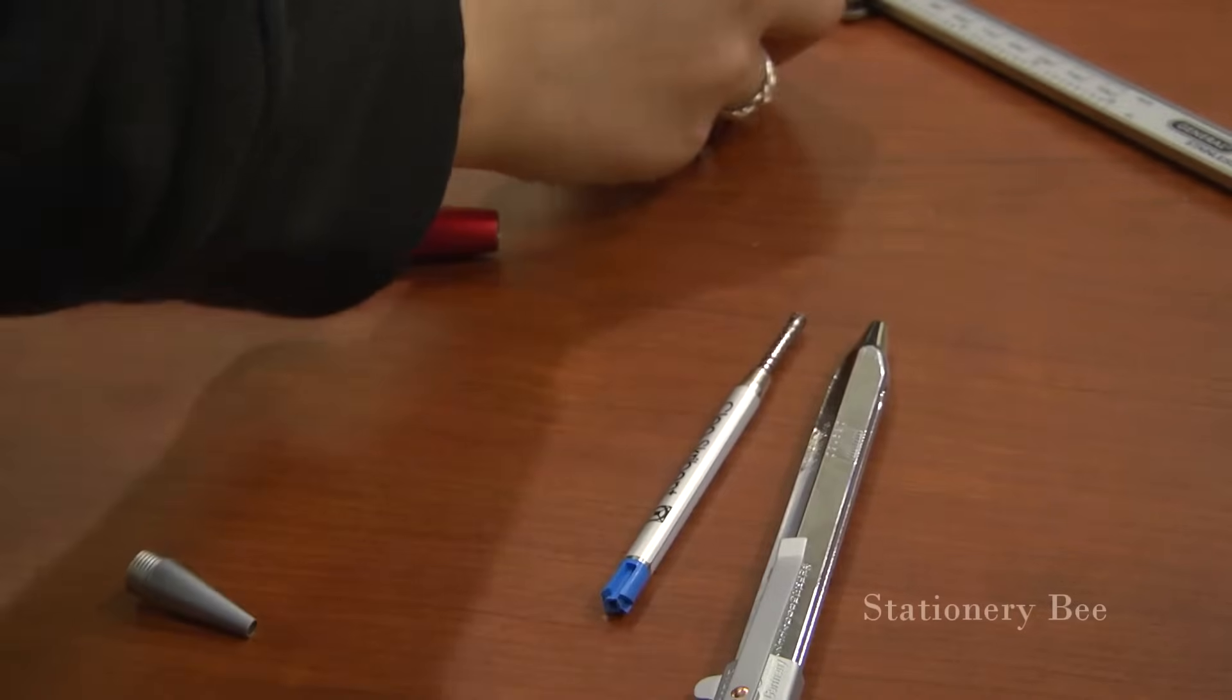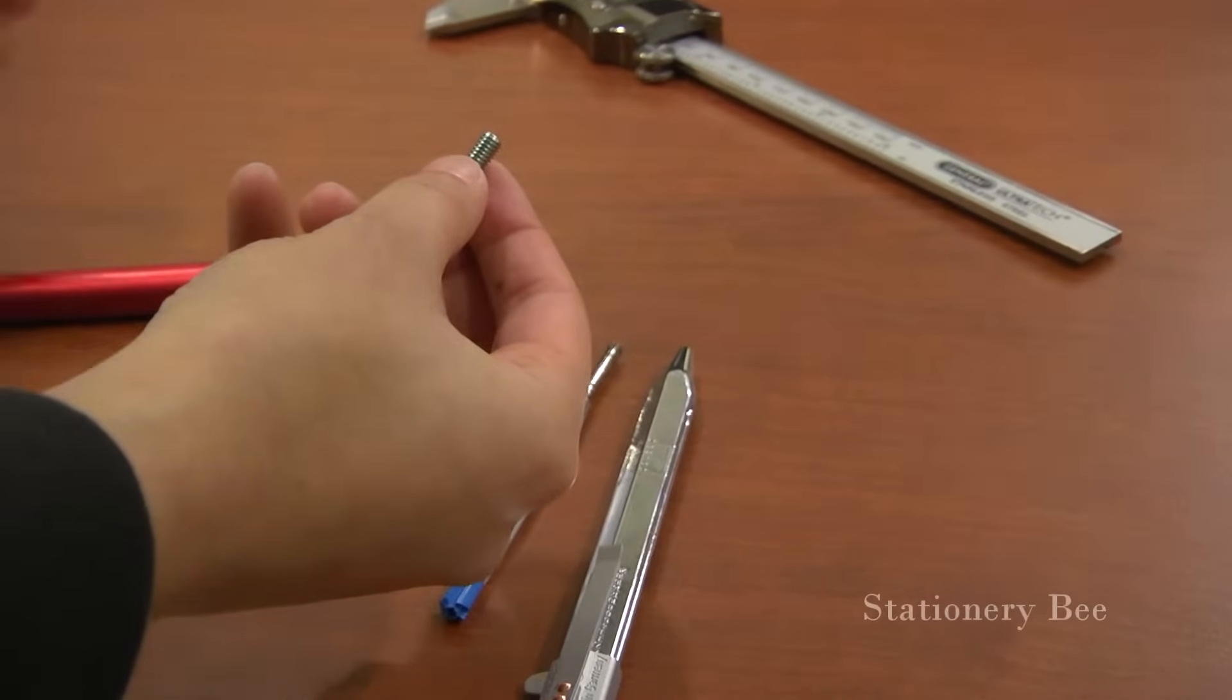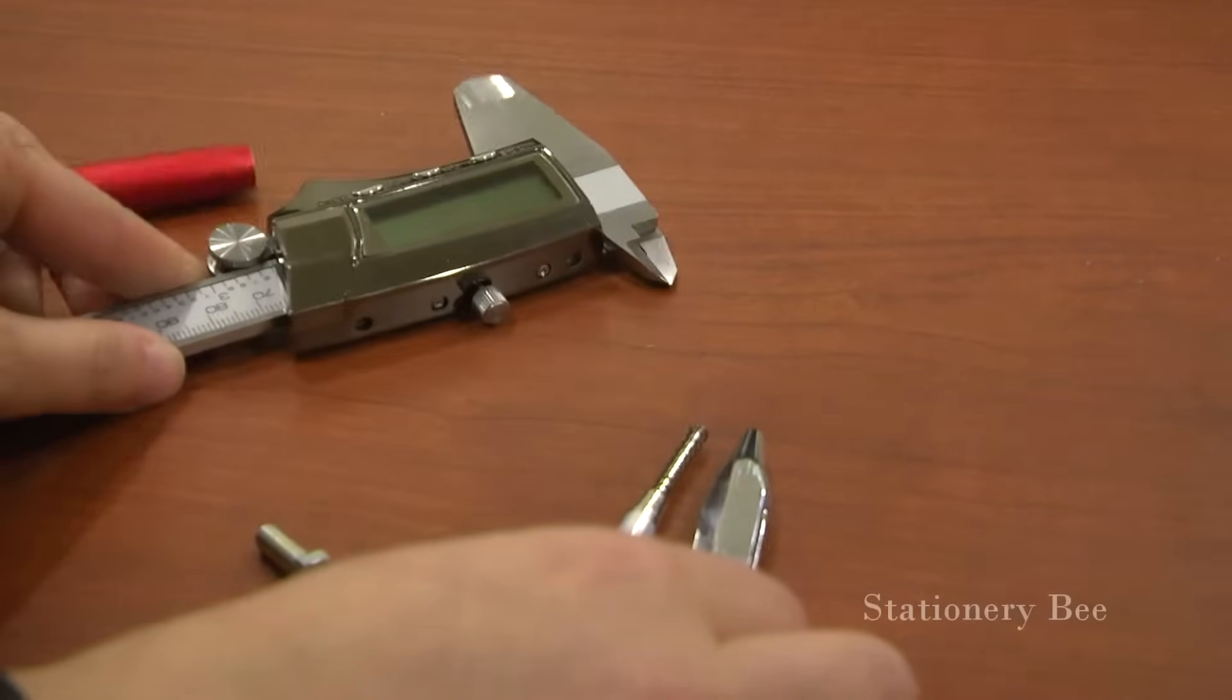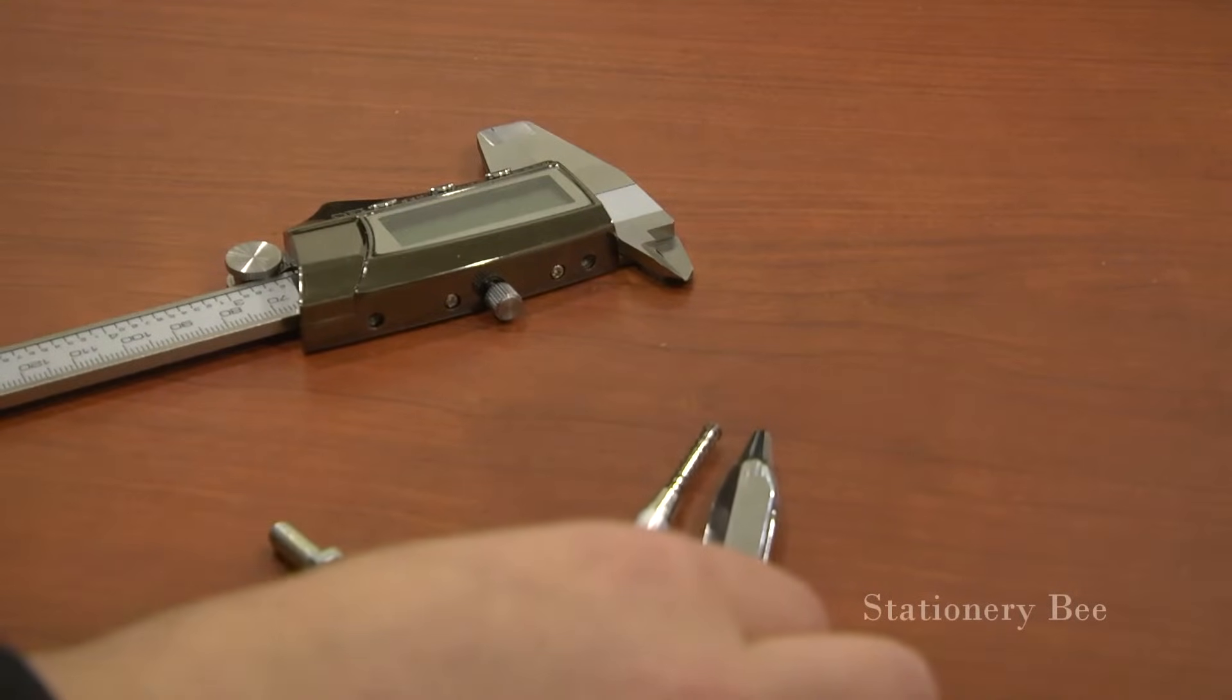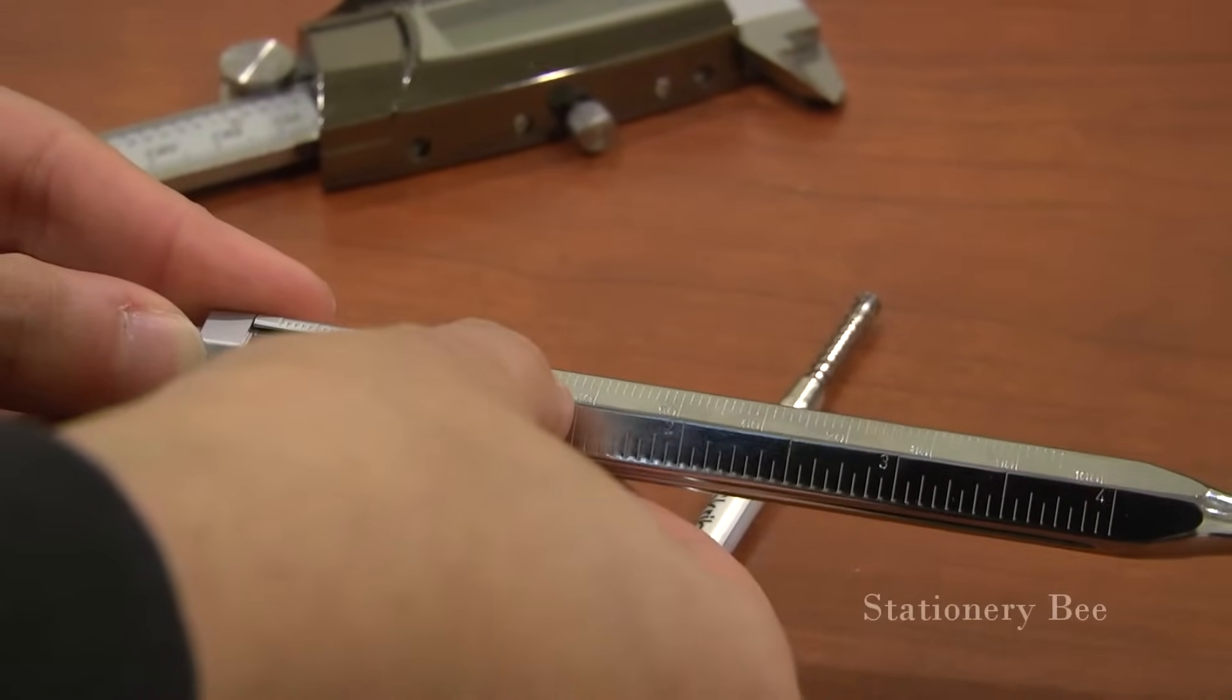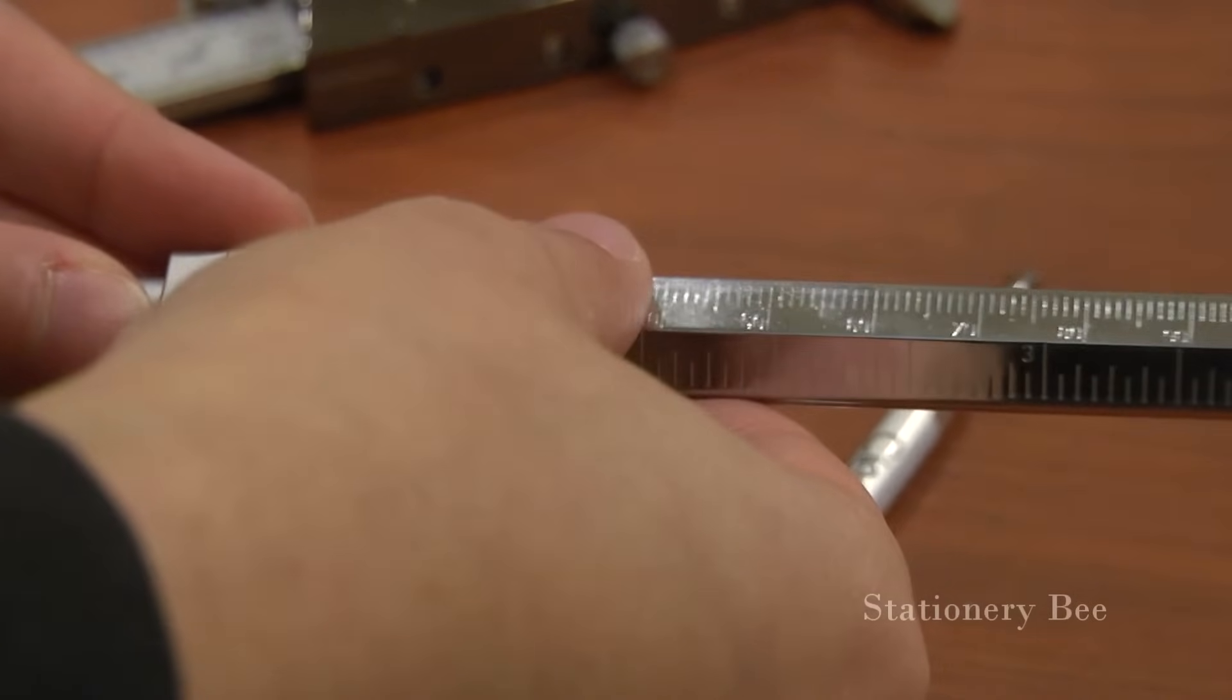So here is a 5mm bolt that I'll test with to see how accurate it is compared to my digital calipers that I have right here. The pen has millimeters on one side and inches on the other side. But I'll use the millimeter side to do the comparison.